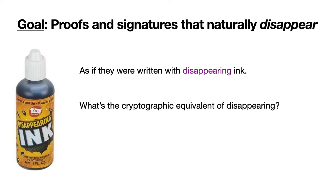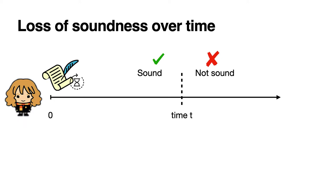In other words, what does it mean to make a digital signature vanish? One way to do this is to have the signature lose its soundness over time. Say Alice signs something at time zero. Up to time t, we want her signature to be sound, but after time t, the signature should no longer be convincing.